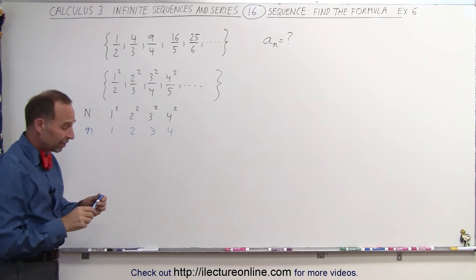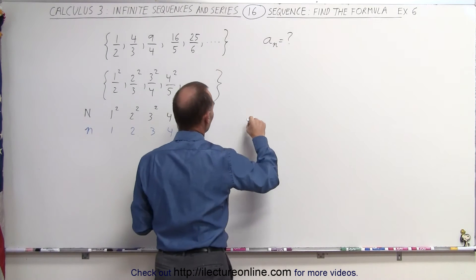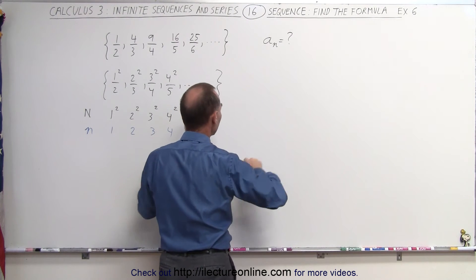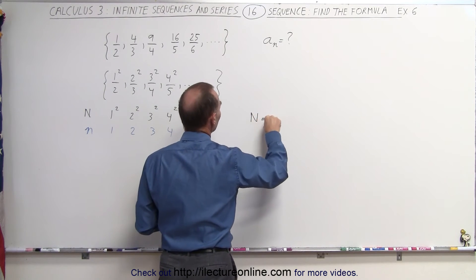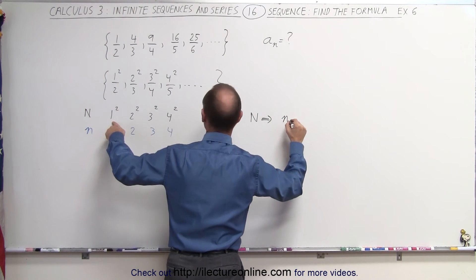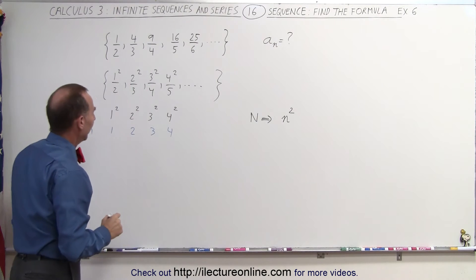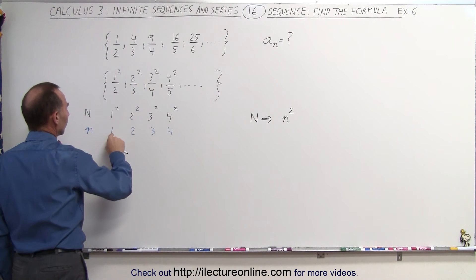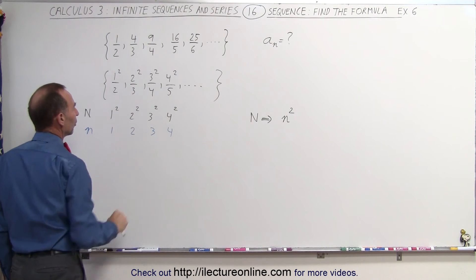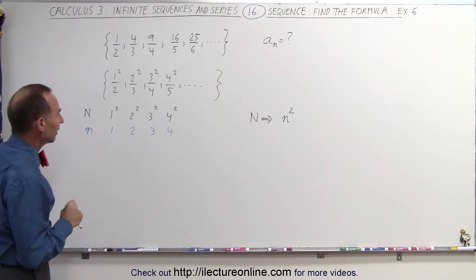All right, that makes it easy. That means the numerator can be expressed as follows. The numerator can be written as n, which is the base, raised to the exponent squared. And it is in sequence, so you see that when n is 1, the base is 1. When n is 2, the base is 2, and so forth. So we don't need an offset in that case.